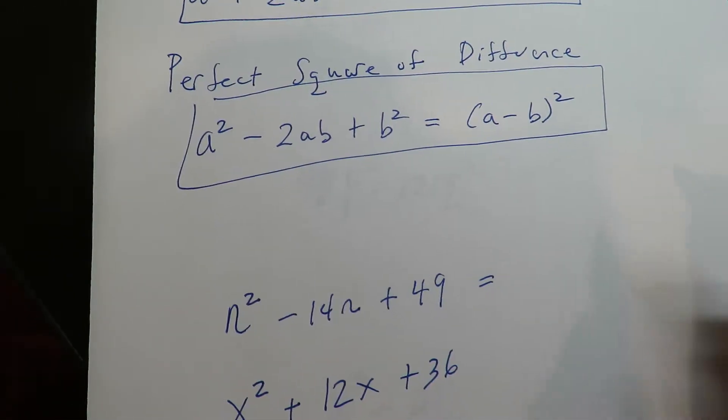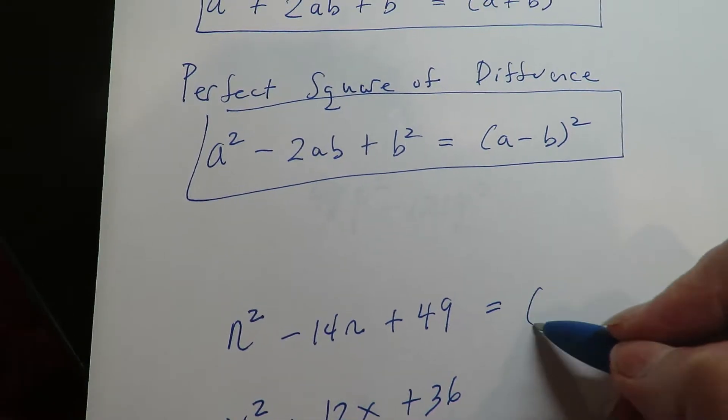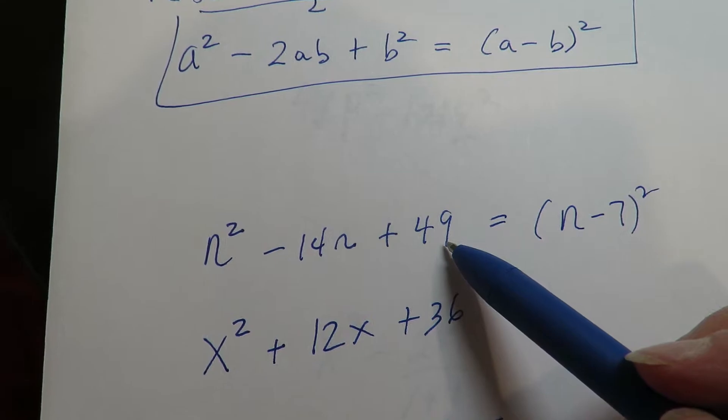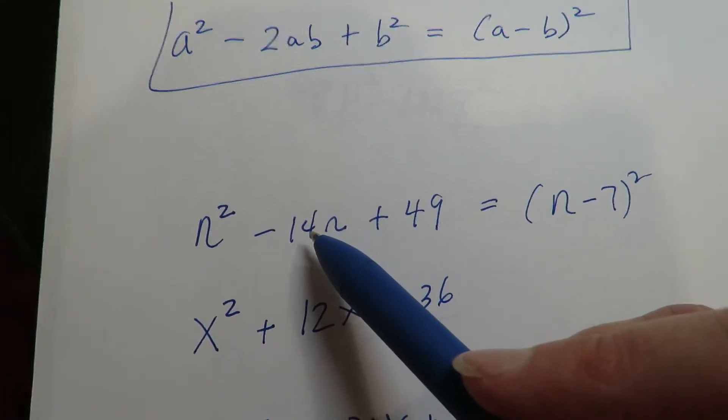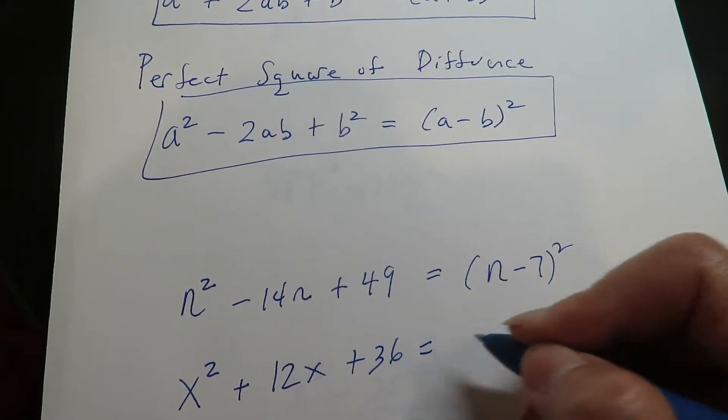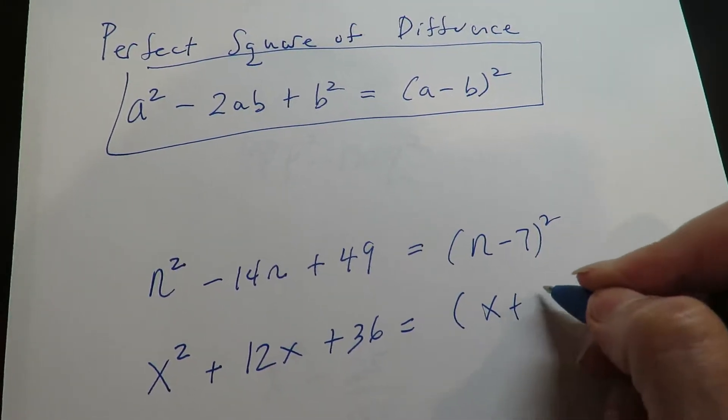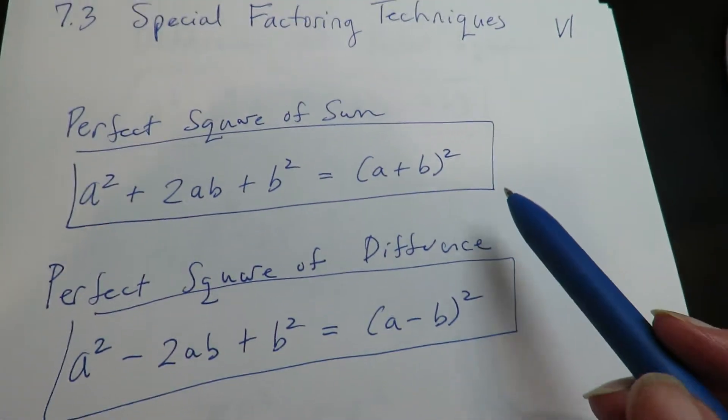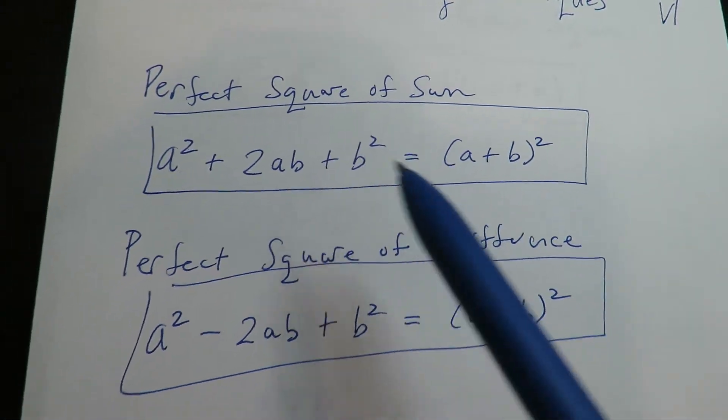If you are using the formula, what my brain does to sort of get the answer quickly is it just takes the square root. The square root of this is 7, and this is 2 times what the square root was. Same thing here. The square root of this is 6. This is twice what 6 is. It's just saying that you have twice the middle.